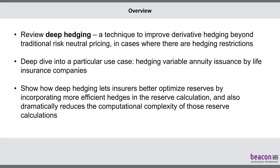A quick overview of what we're going to do in this presentation. First, we'll review deep hedging — the original technique — which allows you to improve derivative hedging performance beyond the traditional risk neutral pricing approach. Then we'll talk about variable annuities and the different kinds of problems that life insurers have managing these. Finally, we'll apply deep hedging to that variable annuity problem and show how it gives you better hedges, a smaller reserve, and also makes the reserve calculations computationally feasible.